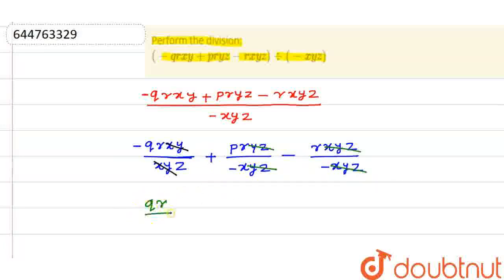So that is QR upon only Z, this is negative, plus, we have, sorry, this is minus because plus, minus, minus, so minus PR upon X, okay, and this is become positive, so this is positive, R, only R.